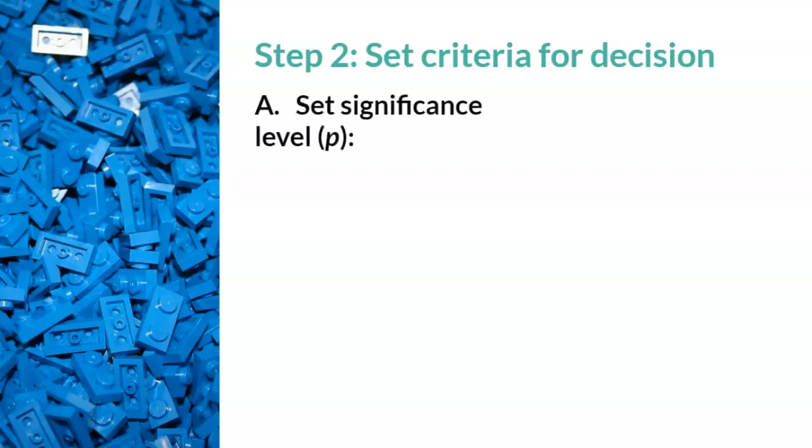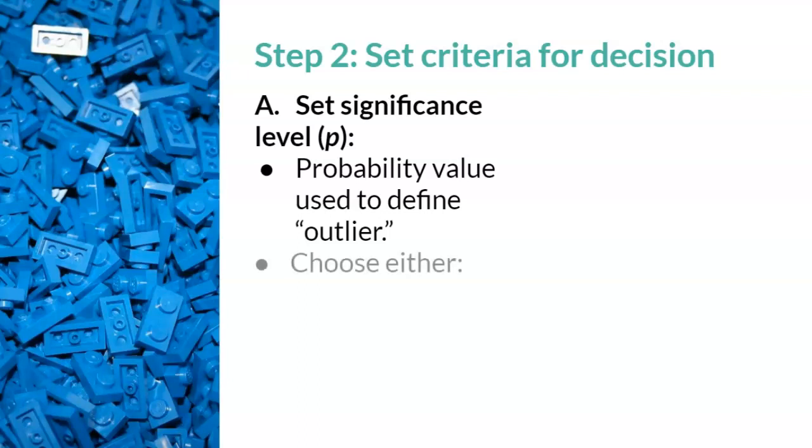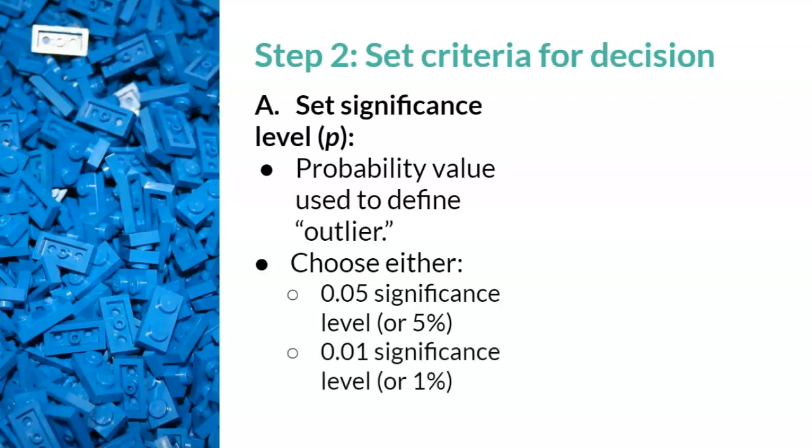First, we will set our significance level, which is called p. Remember that p stands for probability. We are using probability to define an outlier. Thanks to statisticians, they made it easier on us by telling us that we will choose either a 0.05 significance level or a 0.01 significance level. Don't forget that probability can be reported in decimals, fractions, and percentages. So a 0.05 significance level also refers to 5%.